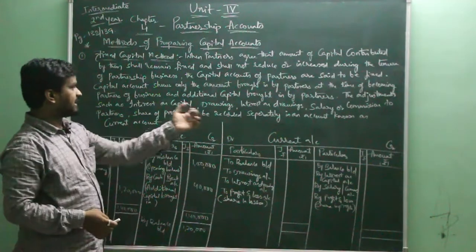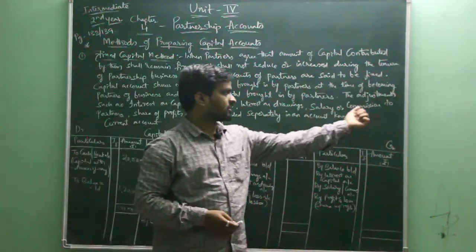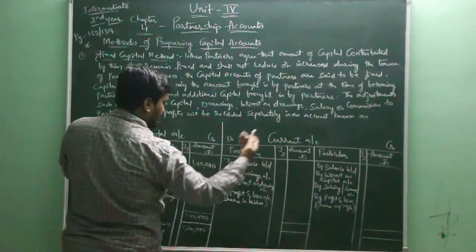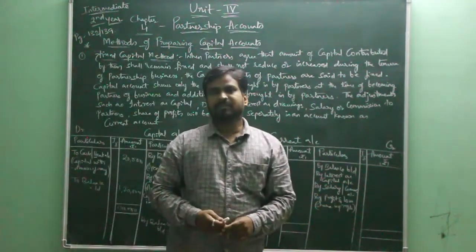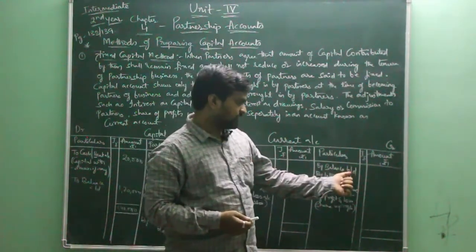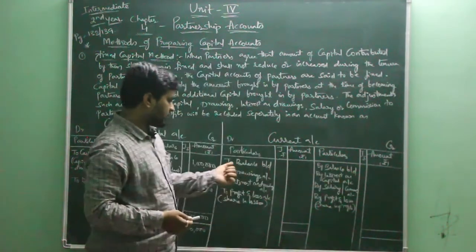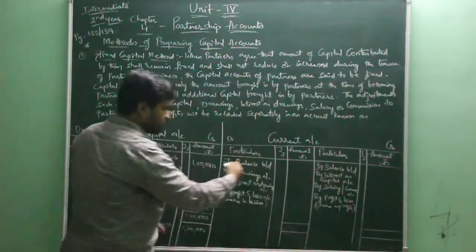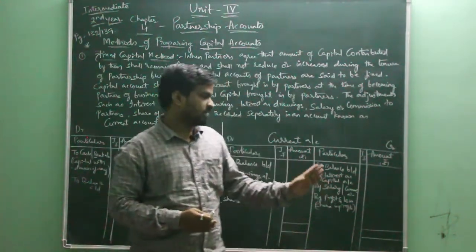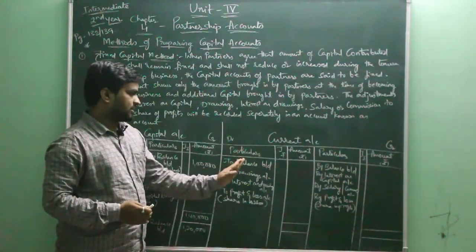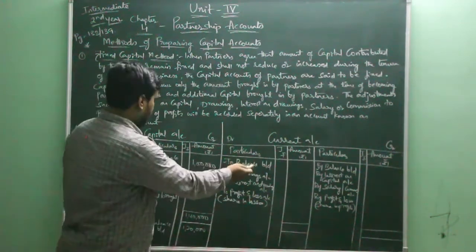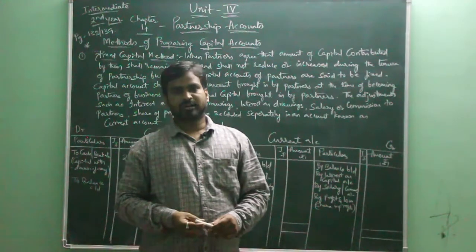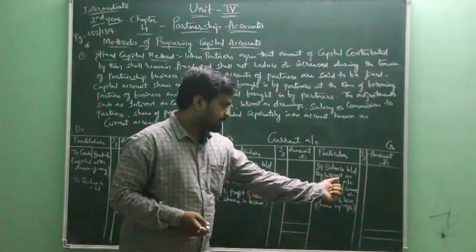The remaining adjustments — such as interest on capital, drawings, interest on drawings, salary or commission to partner, and share of profit or loss — are recorded in a separate account called the current account. The current account also has an opening balance. If it is a credit balance, it will be recorded as 'by balance brought down.' If it has a debit balance, it will be recorded as 'to balance brought down.'